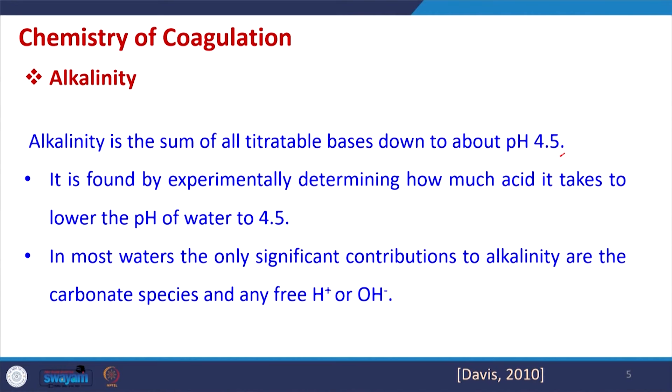In the chemistry of coagulation, alkalinity is very important. Alkalinity is the sum of all titratable bases down to about pH 4.5. It is found experimentally by measuring how much acid is required to lower the pH to 4.5. In most water, the only significant contributions to alkalinity are the carbonate species and H⁺ and OH⁻ ions, though generally we consider only carbonate species for wastewater treatment.